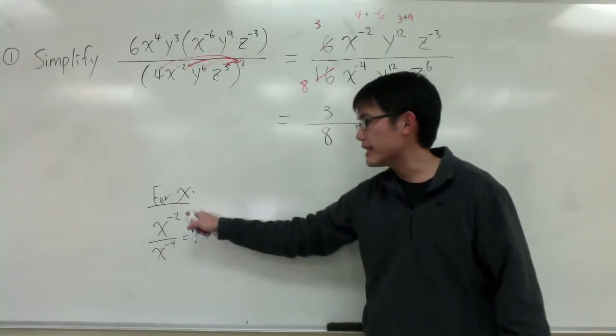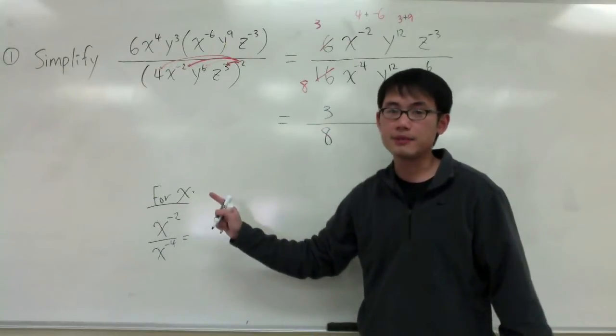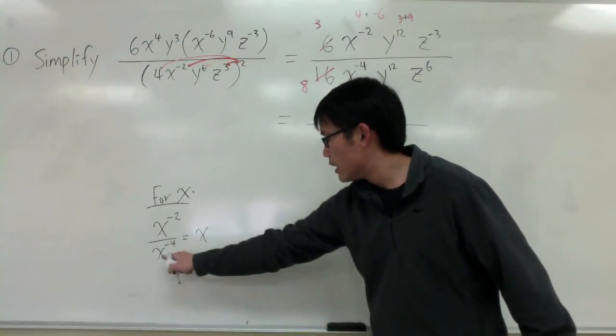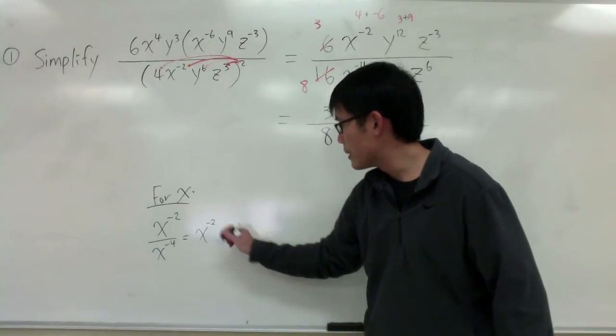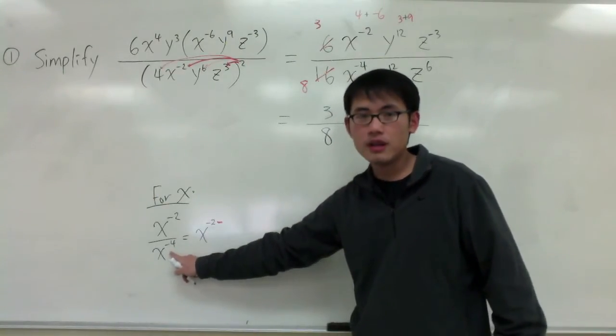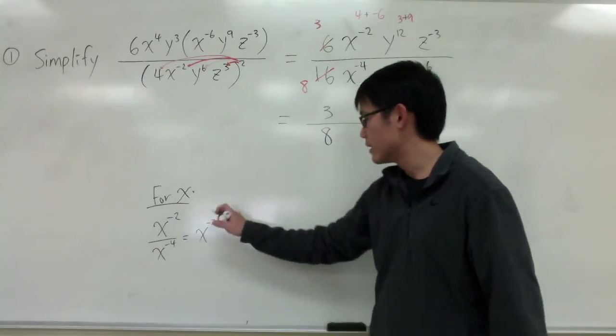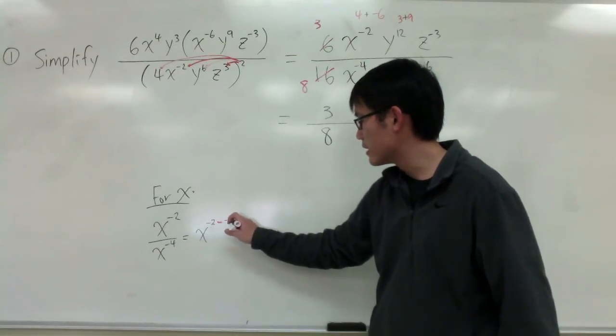What I need to do is, I will take the exponents on the top, and let's subtract the bottom. So, I will have x to the negative 2, but then minus the negative 4, the exponents on the bottom. So, negative 2 minus negative 4.